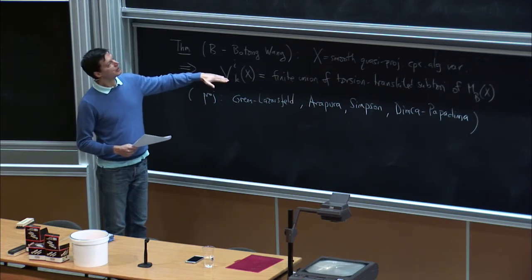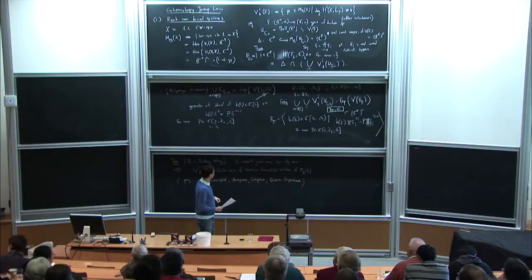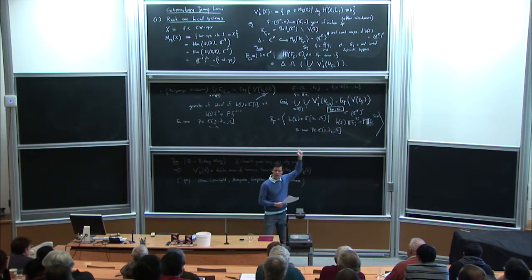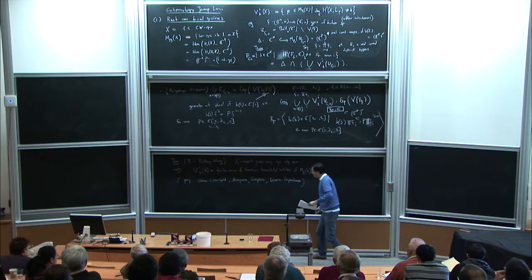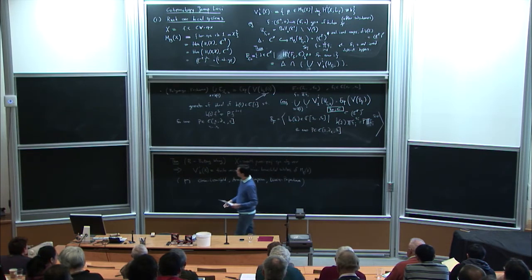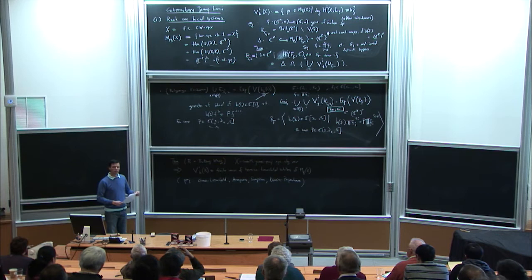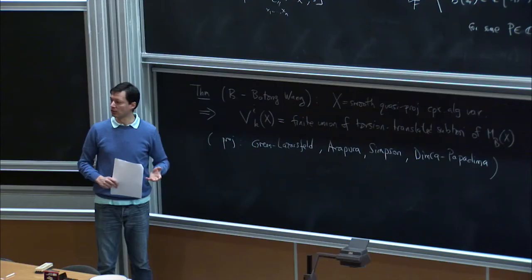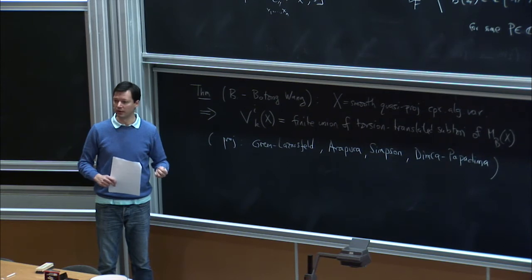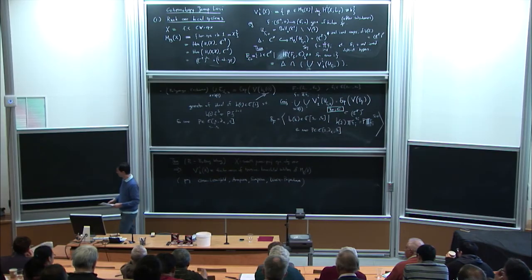In the global case — global as opposed to looking locally in small ball complements — there's a very strong property related to the eigenvalues of the monodromy being roots of unity. So what Botong and I tried to do after this is to understand the structure of these V^i_k's not only for rank-one local systems and not only for moduli spaces of local systems, but for all kinds of moduli spaces where we have a cohomology theory attached to those objects.